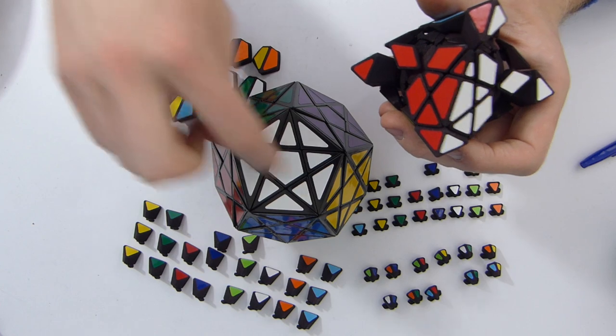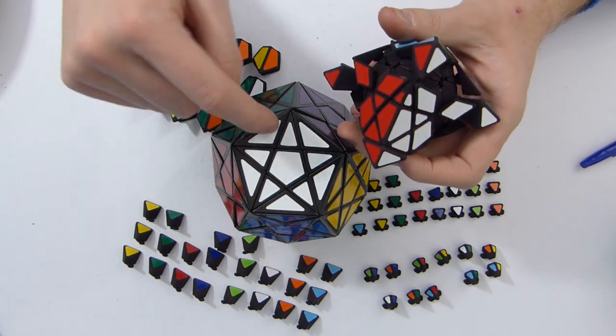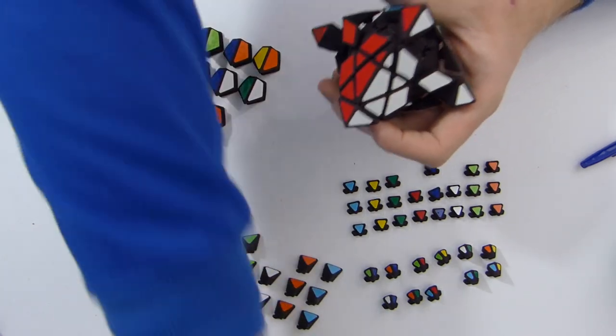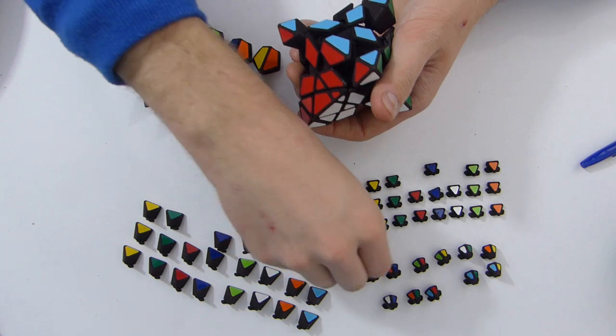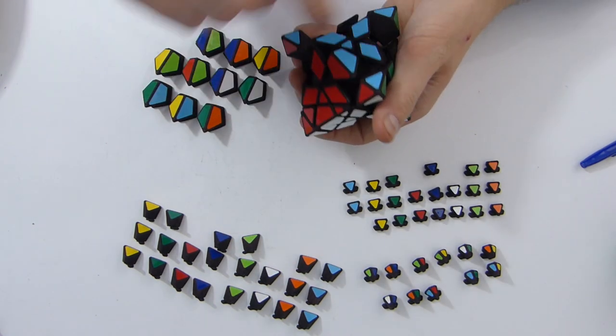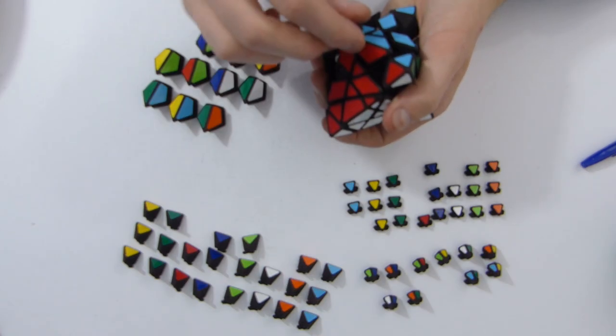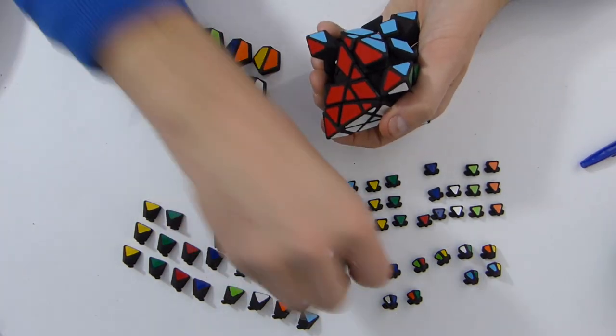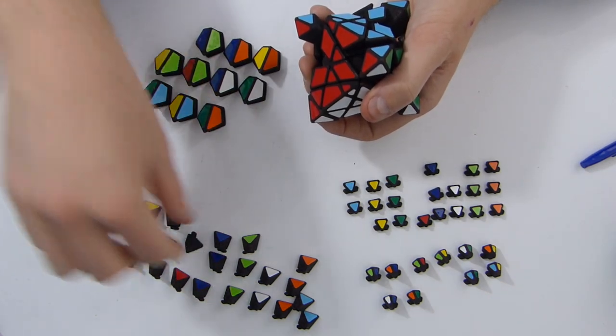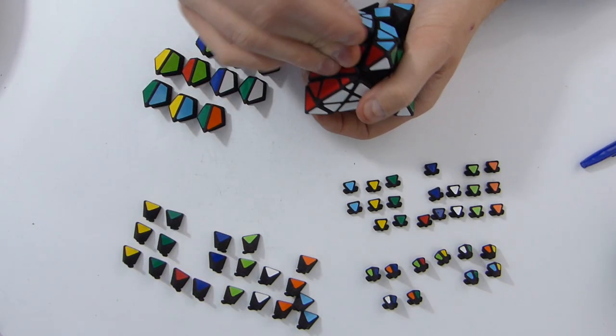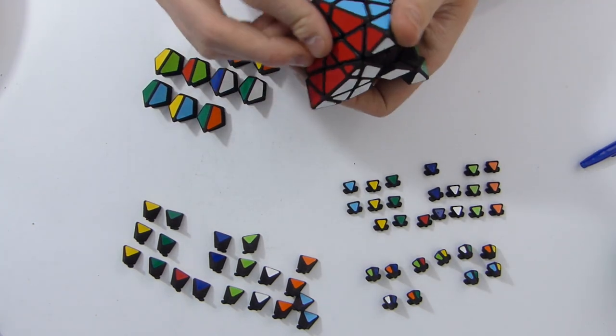Because now, for now, all that I had was the Pyraminx crystal edges, which you can find on a Starminx as well. Now, I'm going to do the red-blue edge right there. Same method as before. So, blue here. Red. Blue-red. Blue. Blue. And red, right there.